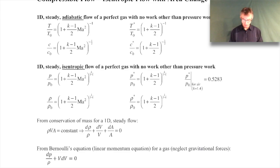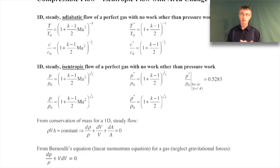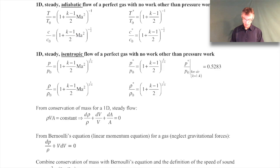You can do the same thing for the speed of sound - this is the speed of sound at that Mach number, and if you brought the flow to rest you'd get the stagnation speed of sound. Then if you make the further assumption of isentropic flow - which we described in the last video as a very reasonable assumption - you get the stagnation pressure ratio P/P₀ and the stagnation density ratio ρ/ρ₀.